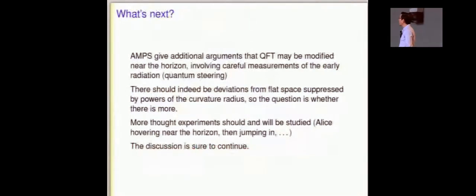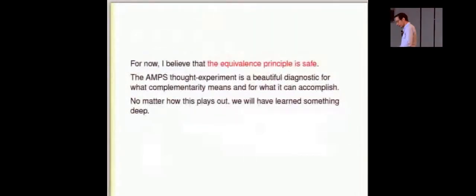So I want to close by just saying that AMPS have more arguments. I gave the one that's the cleanest. It doesn't require any particular measurements on the Hawking radiation. It seems incredibly simple and so at first there seem to be very few loopholes. There are more complicated things you could try to do but they also have more loopholes and I'm sure that we'll be working on more thought experiments in the near future and the discussion is far from over.